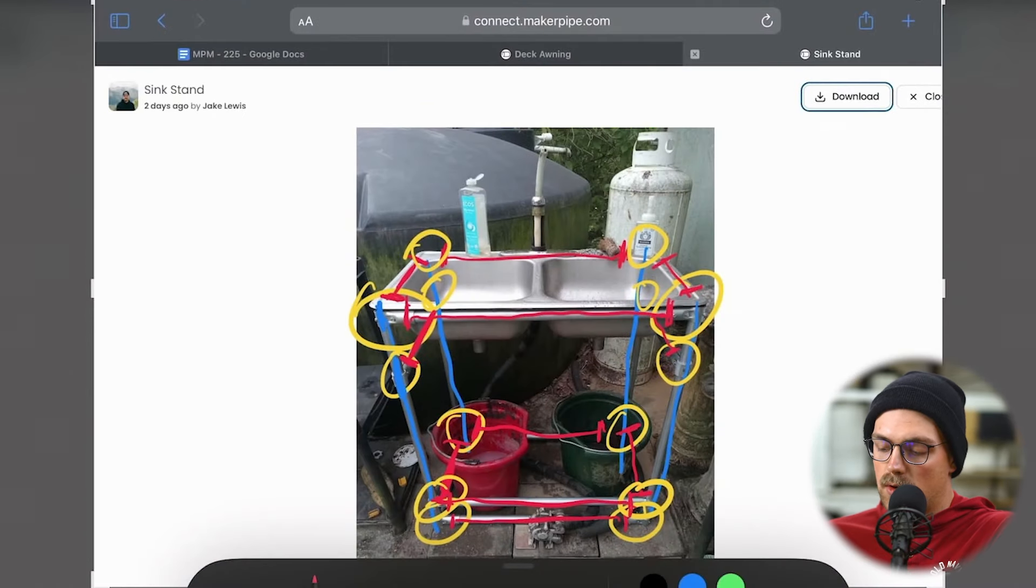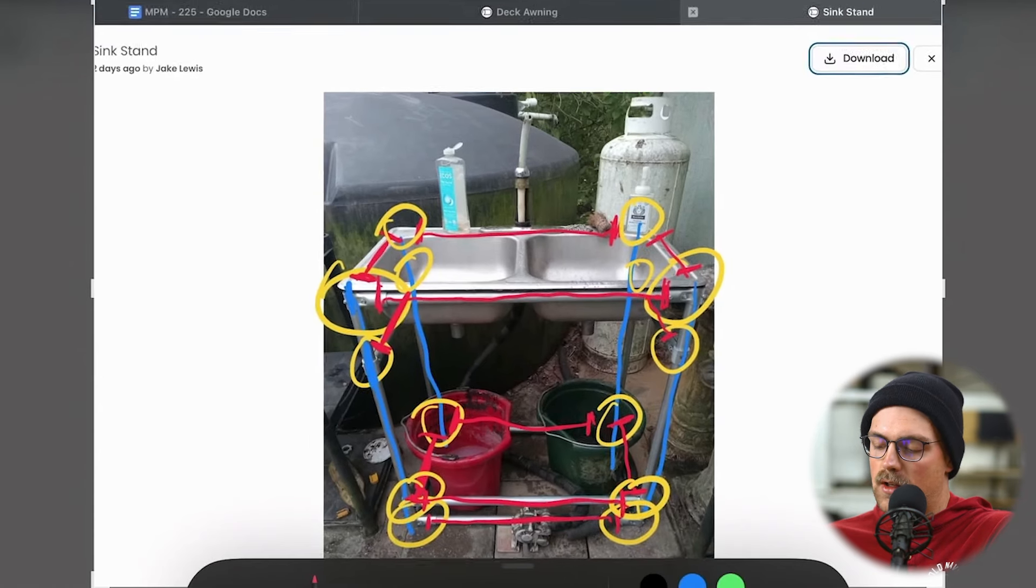But a really nice solution for an outdoor utility sink, you could do the same thing indoors if you wanted to as well. And you don't have to sink a lot of money into it. Because it's just some off the shelf conduit and then not that many connectors as well. So really great build.